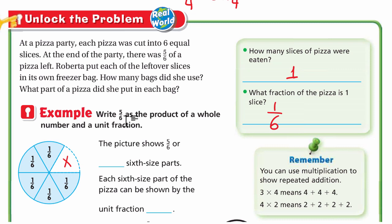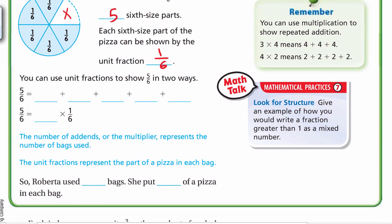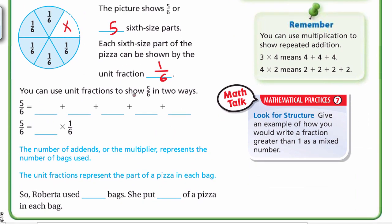Example: write 5/6 as the product of a whole number and a unit fraction. The picture shows 5/6 — we have five sixth-size parts. Each sixth-size part of the pizza can be shown by the unit fraction 1/6. We can show 5/6 in two ways.